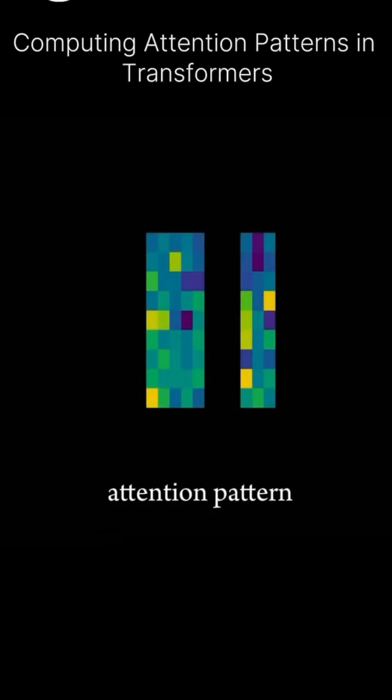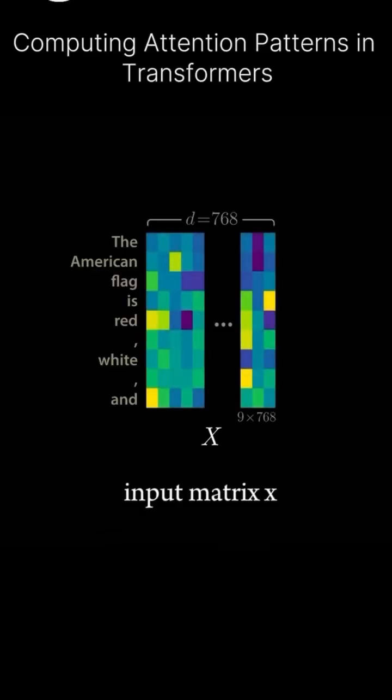To compute a given attention pattern, we take the input matrix X. This could be the input to any layer of our model, and we'll have one row for each input token and a number of columns that corresponds to the embedding dimension of the model. This is the length of the vector used to represent each token.